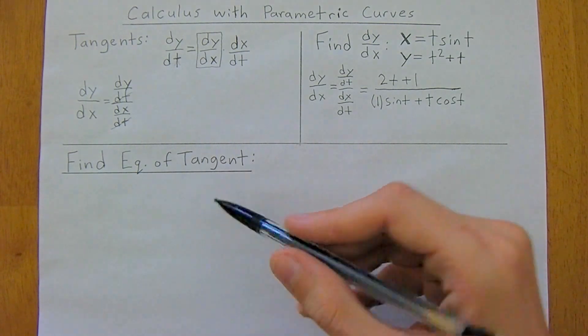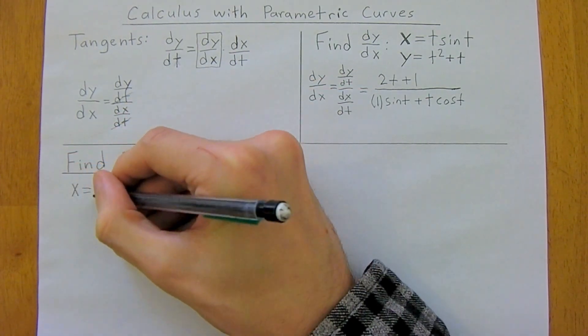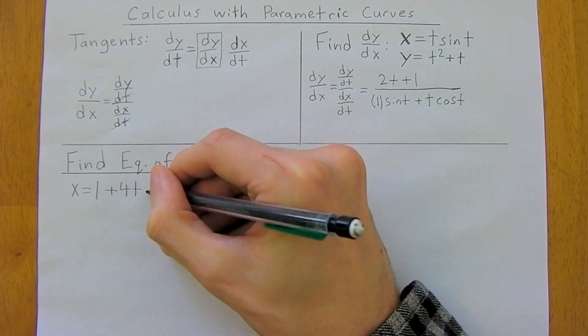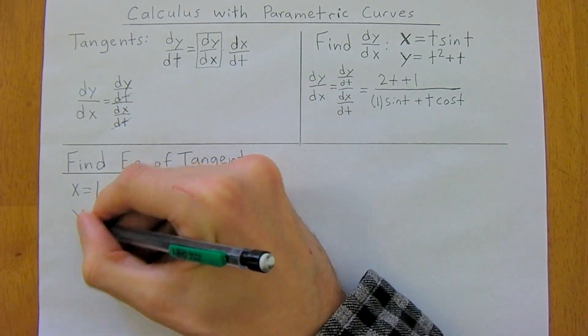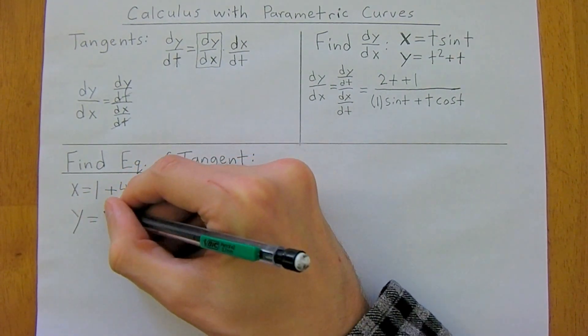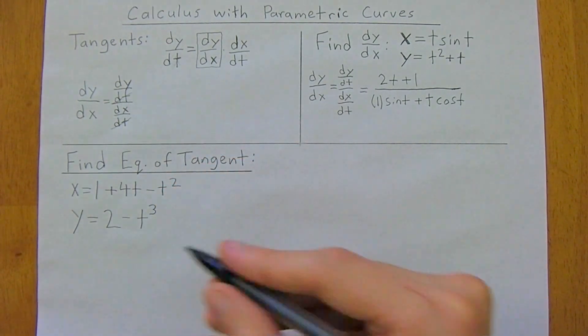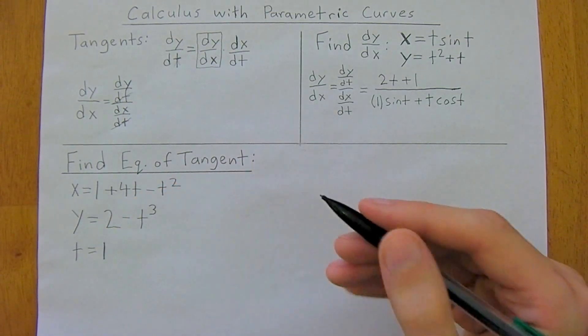So we want to find the equation of a tangent line. And we're given that x is equal to 1 plus 4t minus t squared, and y is equal to 2 minus t cubed. And we're also given that t is equal to 1.